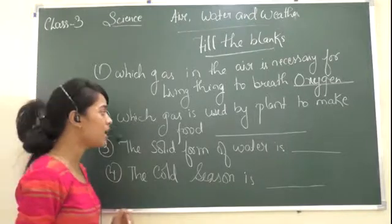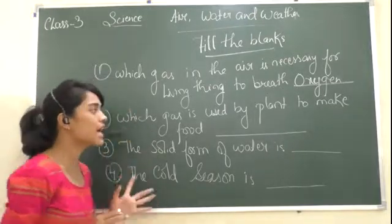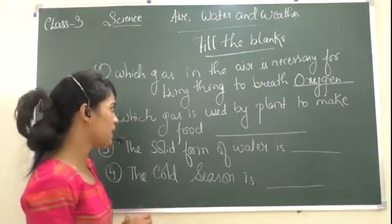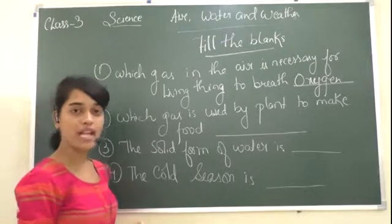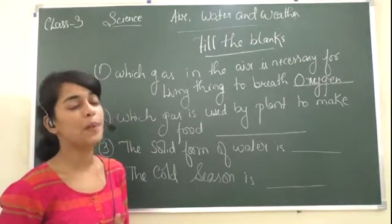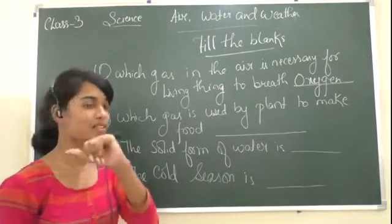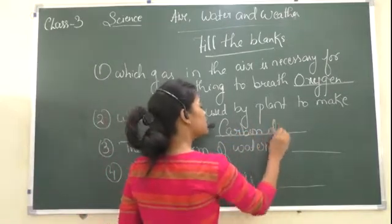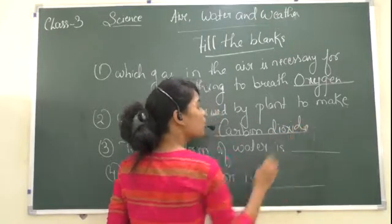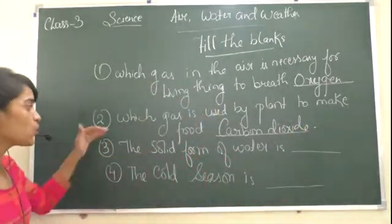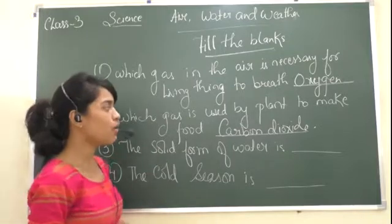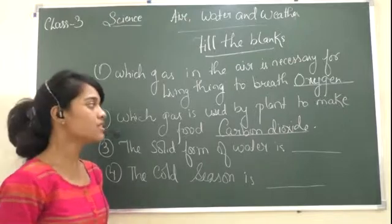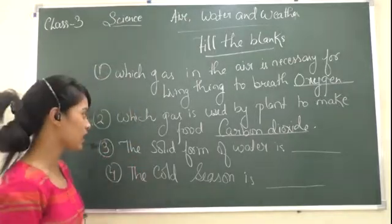Next question: which gas is used by plants to make food? It is carbon dioxide — c-a-r-b-o-n, carbon, d-i-o-x-i-d-e, dioxide.